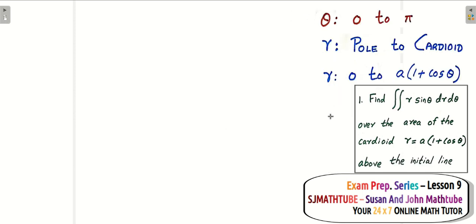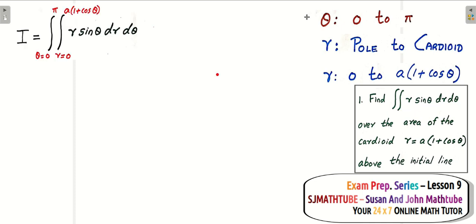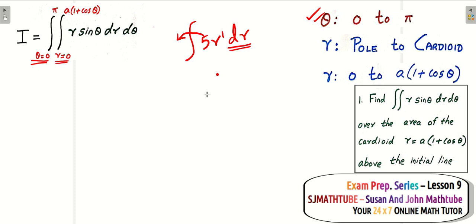Now it is time to integrate. I will write the limits. Remember, we put the angle — theta — first and the variable r second. How do you integrate 5 times r dr? The dr tells you the variable of integration is r, so you integrate with respect to r. You can keep the 5 outside and get 5 times the integral of r to the power 1 dr, which gives 5 times r squared over 2. We have something similar here: when you integrate with respect to r, theta is treated as a constant, and therefore sin theta is also a constant.